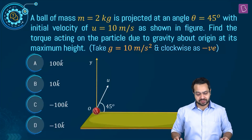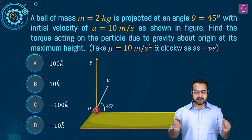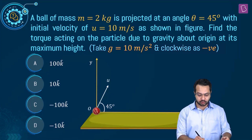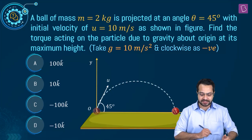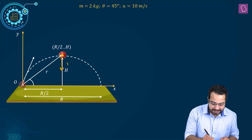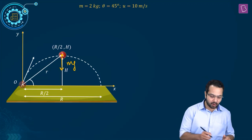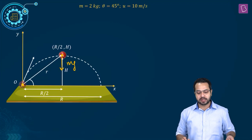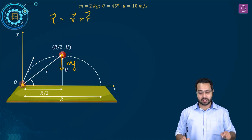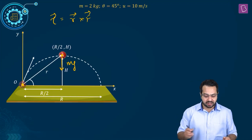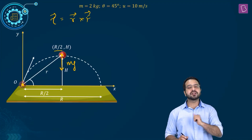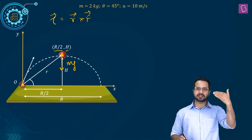Next question: a ball of mass 2 kg is projected at 45 degrees with initial velocity 10 m/s as shown in the figure. Find the torque acting on the particle due to gravity about the origin at its maximum height. The particle follows a parabolic trajectory. We need the torque of the weight (mg downward, i.e., minus j direction) at the highest point, taken about the point of projection. At the highest point, the particle has traveled half the range horizontally and maximum height vertically.